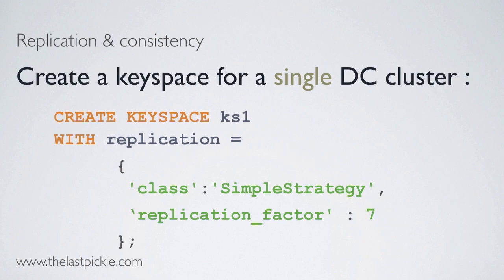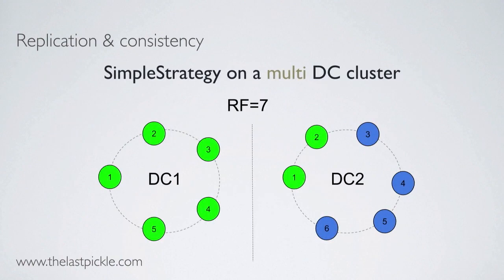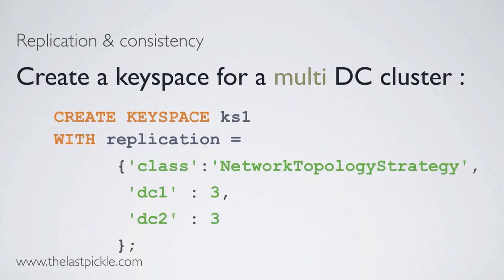To create a keyspace for a single DC cluster, you will run a simple create keyspace statement. If you have a single DC, you are mostly using simple strategy with a replication factor that usually is three. But if you run this on a multi-DC cluster, you will end up with probably unbalanced replicas, because it does not account for the DC. On multi-DC clusters, we will use network topology strategy, which allows us to specify the number of replicas per DC.